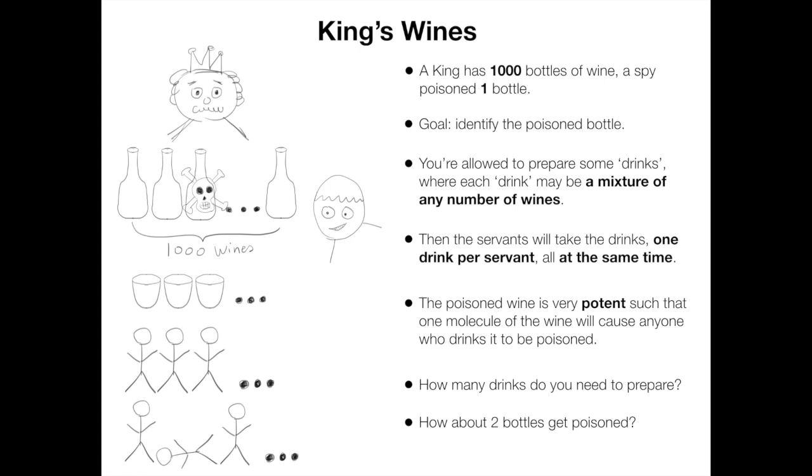Our goal is to find out which bottle gets poisoned. What we can do is to mix these wines into some drinks and ask the servants to test them. By observing which servants get poisoned, we want to identify the poisoned bottle.